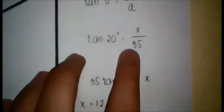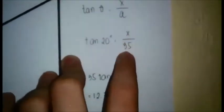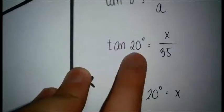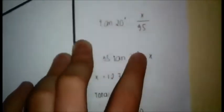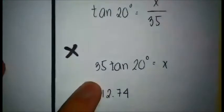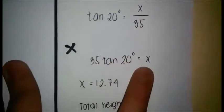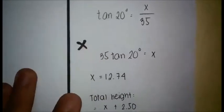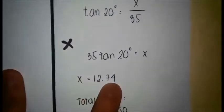After that, we cross-multiply. Imagine that there is 1 below tangent 20 degrees. Then we have this equation: 35 tangent 20 degrees equals x. Solving for this equation, we get x equals 12.74.